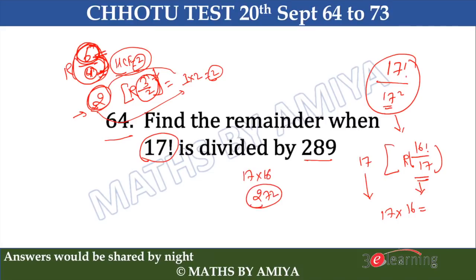I hope it is clear. If you have any doubt, please rewind and review this concept. The HCF-out concept will also help you in the Chinese Remainder Theorem. Please bring your pen and paper, note down all the questions, and solve them — these are of utmost importance. The answer to question 64 is 272.